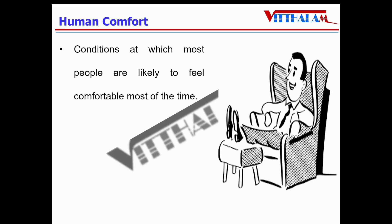Then human comfort. It is the condition at which most people are likely to feel comfortable most of the time. Also known as thermal comfort. The range as far as dry bulb temperature is concerned, it is 22 to 27 degrees Celsius, and the RH will be 40% to 60%.